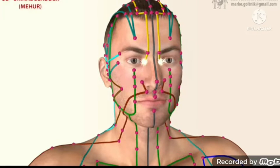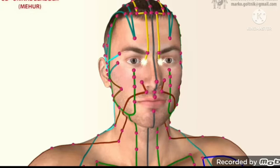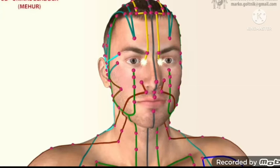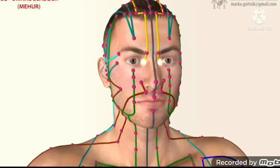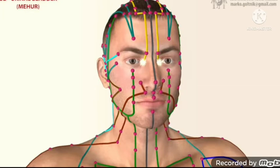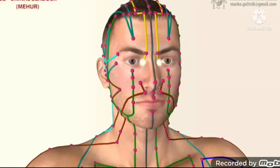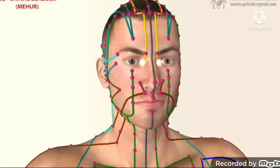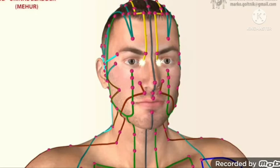Hi all, in the last video we covered the small intestine meridian, which was the yang meridian that came from the little finger to our face. Now from here the UB meridian starts, which goes from face to toe.